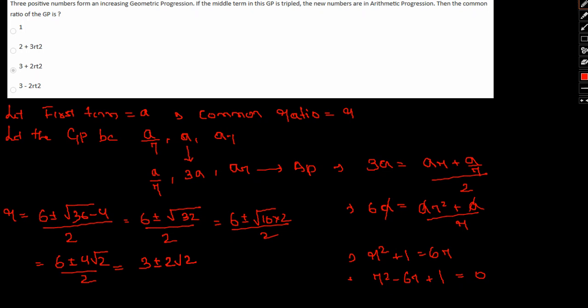So R in this case, since it is given that it is an increasing geometric progression, R could either have been 3 + 2√2 or 3 - 2√2. Since this is increasing GP we cannot include 3 - 2√2, so 3 + 2√2 will be our answer.